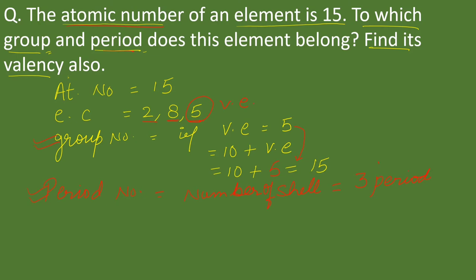Now the last point is valency. If number of valence electrons are 4 or more than 4, then valency is equal to 8 minus valence electron. This is the formula.